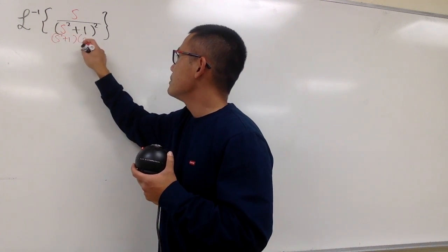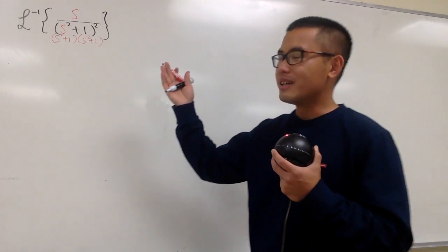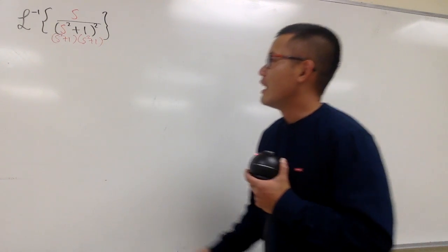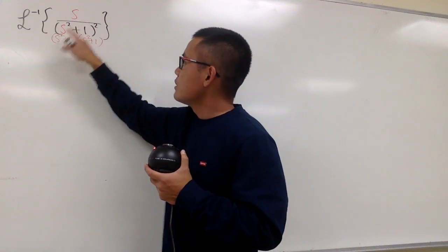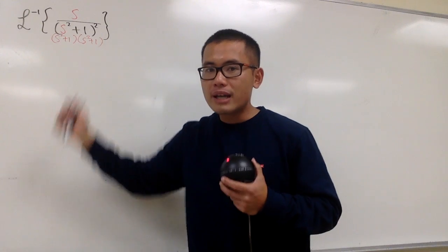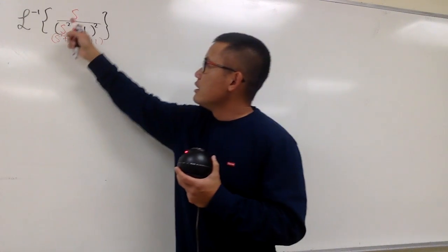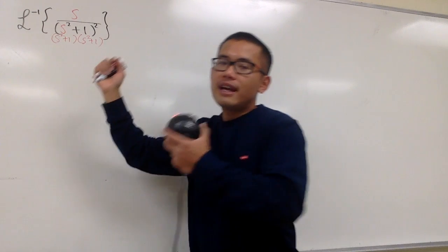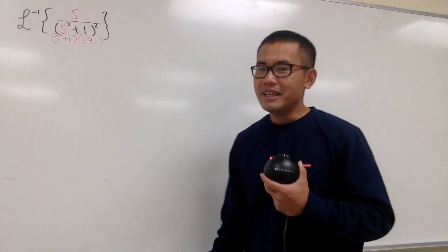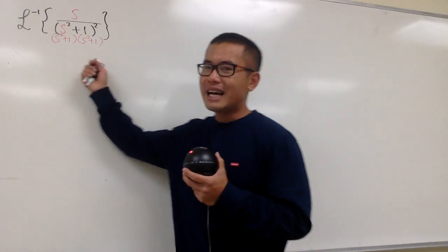This is (s² + 1) times (s² + 1). If you would like, you can go ahead and use partial fractions, but let's not do that. We have a better way, because now we can look at s over (s² + 1)(s² + 1) as a product of two things. It's not necessarily easier, but it's going to be really cool. So let's do that.